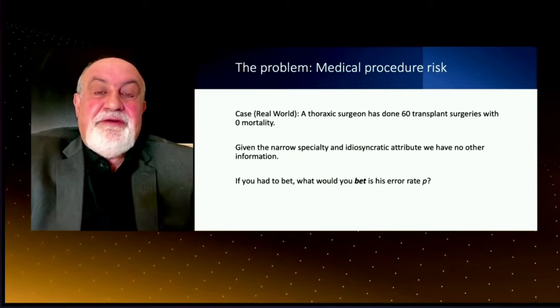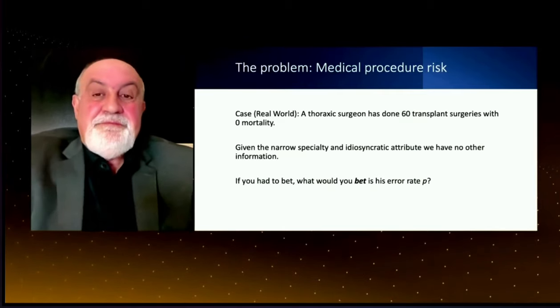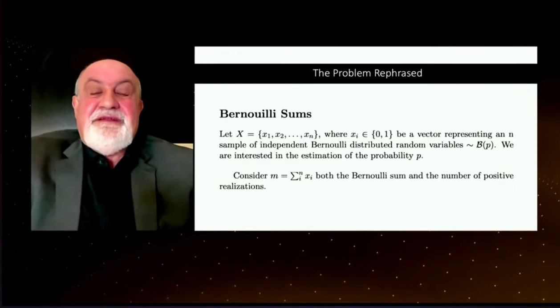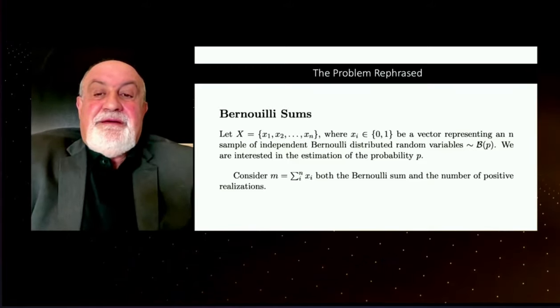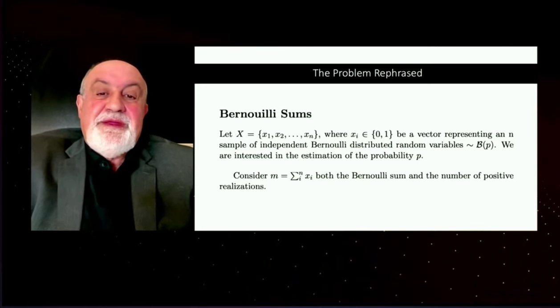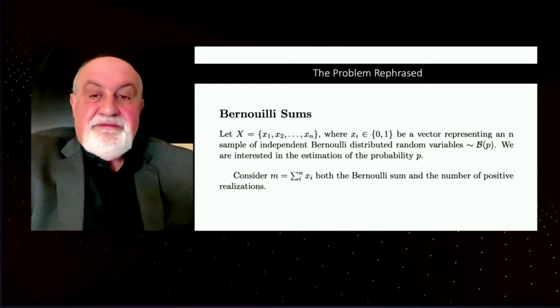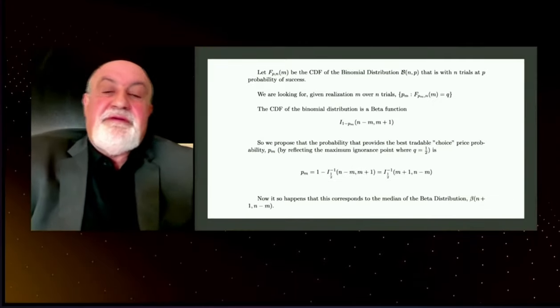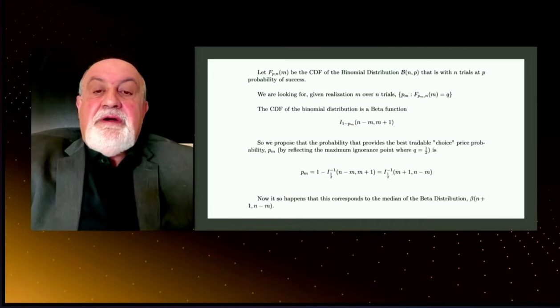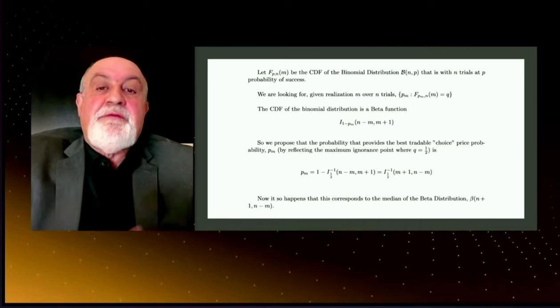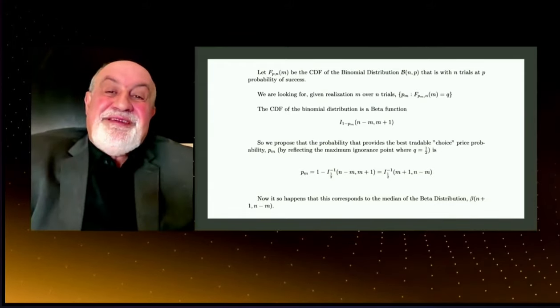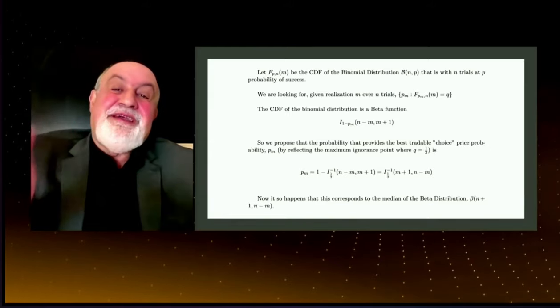On the error rate, how would you bet what it should be? So the trick I figured out is as follows. Let's say we have Bernoulli sums. We know that the sum of Bernoulli follows a binomial distribution. M is the sum of the observations of zeros, basically would look like a counter. Now we're looking for the probability p that would make the CDF equal half.